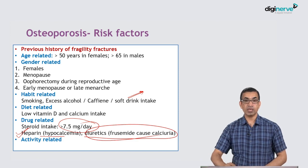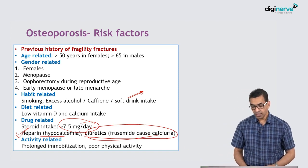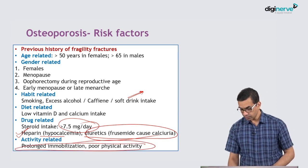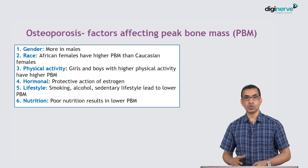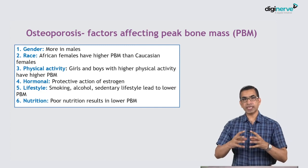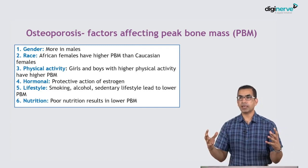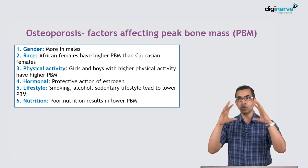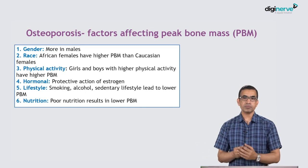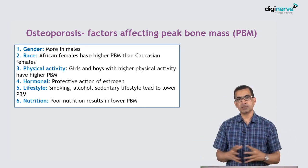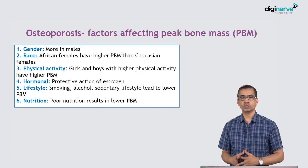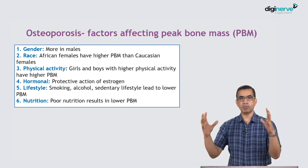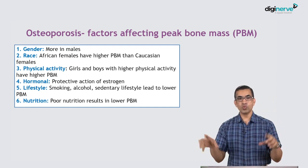Furosemide, a diuretic, causes calciuria, gradually depleting calcium. Immobility is also a major risk factor for osteoporosis. As we grow from age 0 to 30, we continue to gain bone mass. If I compare it to a room that can be filled with 100 cubic-foot boxes — 100 boxes represents the standard — not everybody will achieve that 100; some may get 80, 85, 90, and some may remain at 40 or 45.